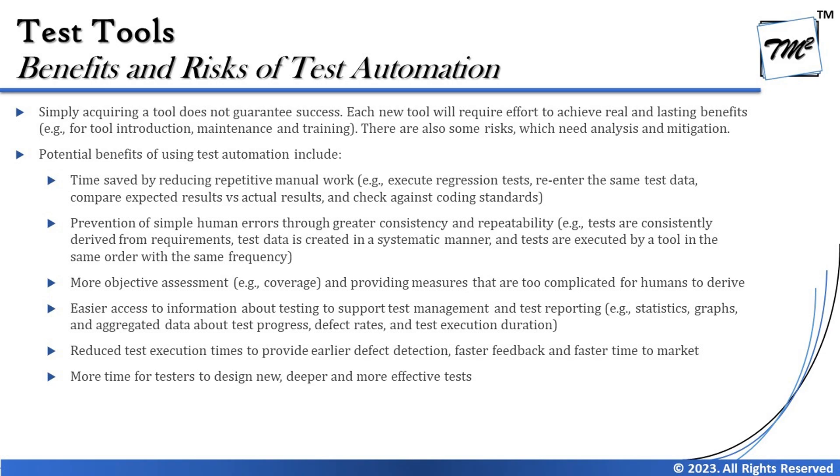Another benefit is prevention of simple human errors through greater consistency and repeatability. This is related to test management tools or any automation tools as well. For example, with automation testing tools we follow certain syntax for languages, which prevents human error — because in manual testing different users can perform things differently, but when scripts are written they always maintain consistency. Similarly, a test management tool drives things systematically through its defined fields and dropdown values, rather than people managing things in spreadsheets.